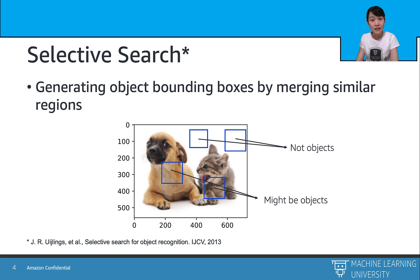So the first step, selective search, is proposed in a paper from researchers at University of Amsterdam. And the fundamental idea is to generate possible object bounding boxes by merging the similar smaller regions into the larger ones. To be more concrete, it contains the following three steps.